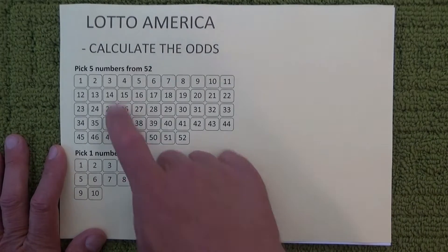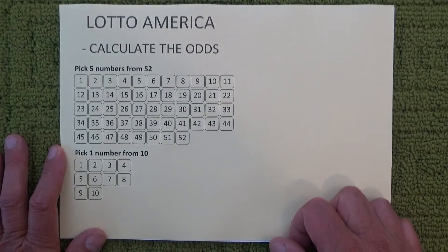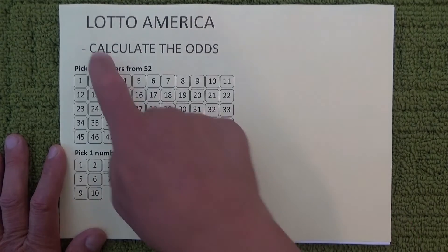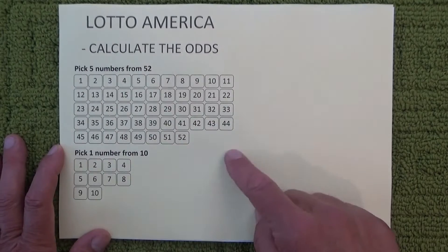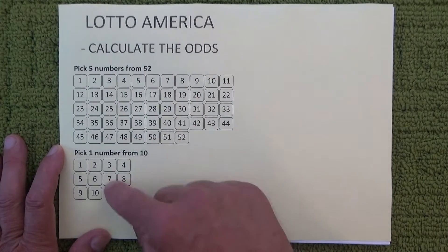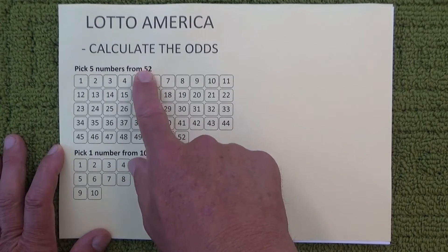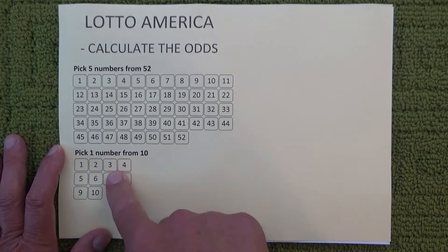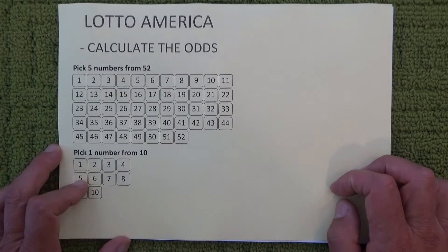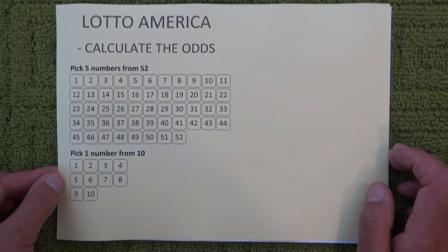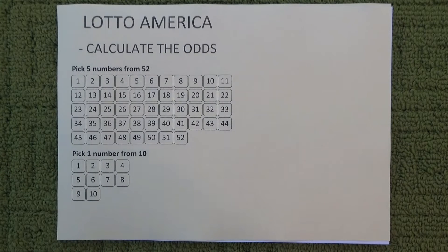Hello, today I'm going to show you how to calculate the odds — the probability of winning first prize in Lotto America. On this sheet of paper I've got an entry coupon template, and I'm going to pick five numbers from 52 in the top section and one from 10 in the bottom section, in the star ball section. Hopefully this will help you understand how the odds are calculated.